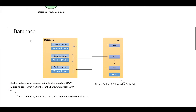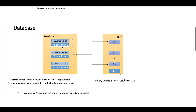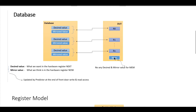The RAL database will have pairs of desired and mirrored values. For example, if our DUT has some number of registers — R0, R1 up to RM — for all registers there is a pair of desired and mirrored values within the register database. For memory, however, there is no desired and mirrored value.